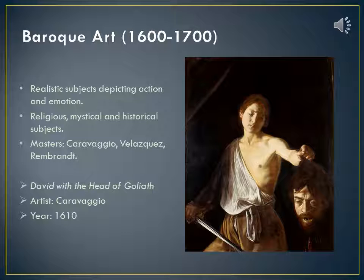This painting shows some of the characteristics of the Baroque period. We can see the strong emphasis on the emotion shown by David, who has a compassionate look filled with remorse. The brightness on David's face in contrast with the rest of the painting is an example of the dramatic lighting used by Baroque painters.